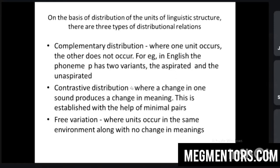Similarly, allomorphs: when a word ends with a voiceless sound, the past tense -ed will take another voiceless sound. In the plural morpheme, we see: 'cats' uses /s/, 'dogs' uses /z/, and 'horses' uses /ɪz/. These are all allomorphs of the same morpheme. Complementary distribution means when one unit occurs, the other does not occur in the same place.